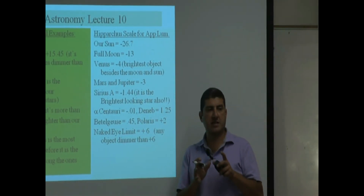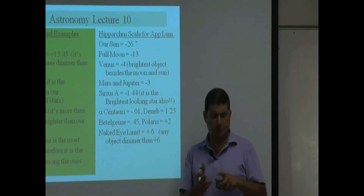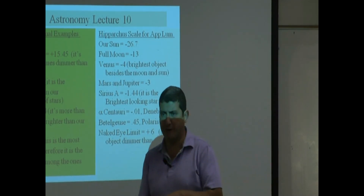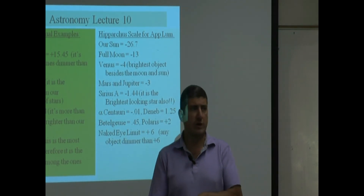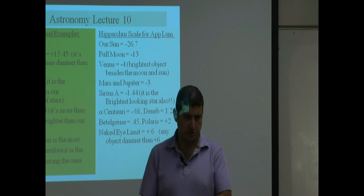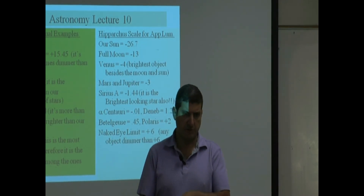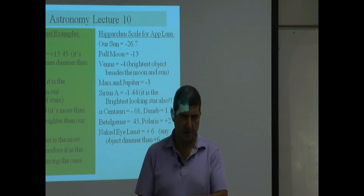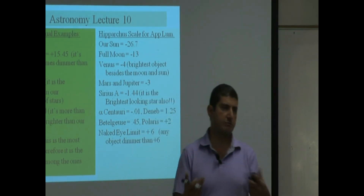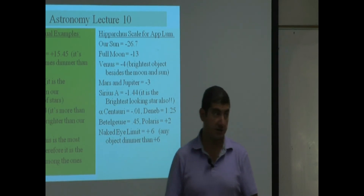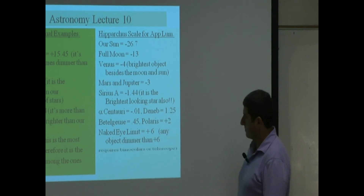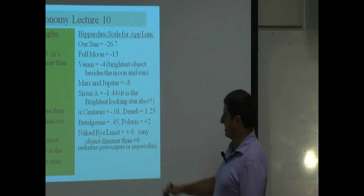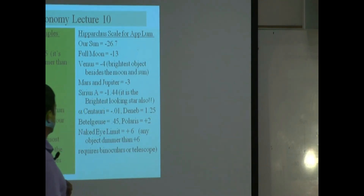The naked eye limit is about positive 6. If something is rated positive 4, 5, or 6 and you want to see it without a telescope, go out to the desert — Palm Springs or somewhere similar — and you may be able to see it. Anything dimmer than positive 6 requires binoculars or a telescope.